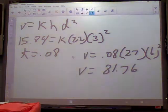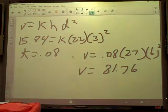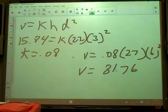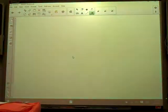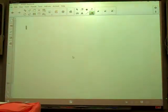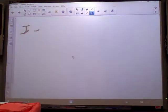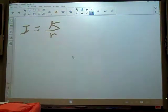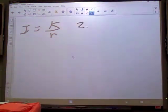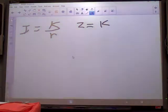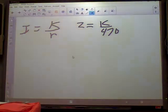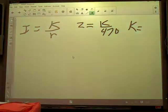Alright, number 2, we ready? The current I in an electrical conductor varies inversely. When we vary inversely, we're dealing with a division. It varies inversely as the resistance R. So I'm gonna say I varies inversely as R. Then it tells us some stuff. The current's 2 when the resistance is 470. So 2 equals K divided by 470. So we're gonna multiply by 470 and we get K is 940.